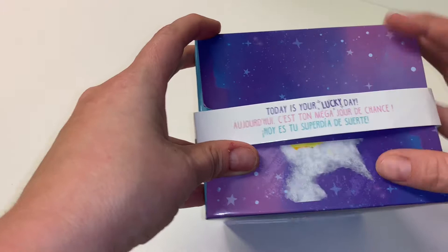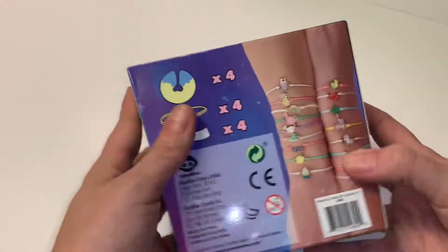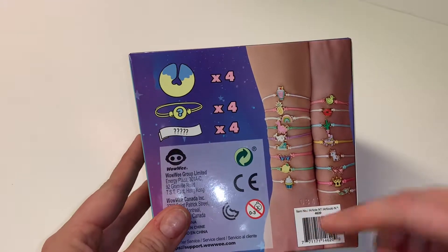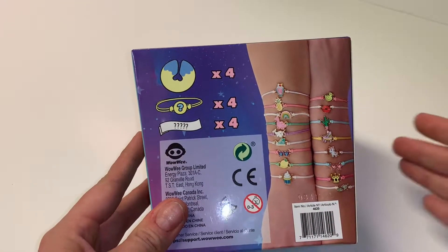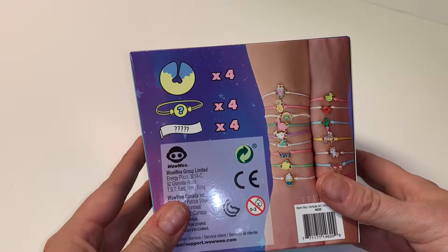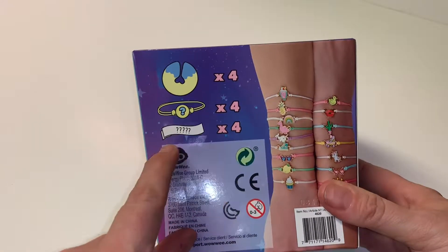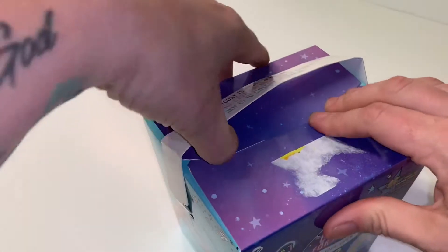Something on top, today is your lucky day. On the back here they show some of them that you can collect. I do have some of these already. I did not open them on video because I did just start this channel. So you get four of the fortune cookies, four bracelets, and four of the fortunes. Let's go ahead and get started and see what we got.